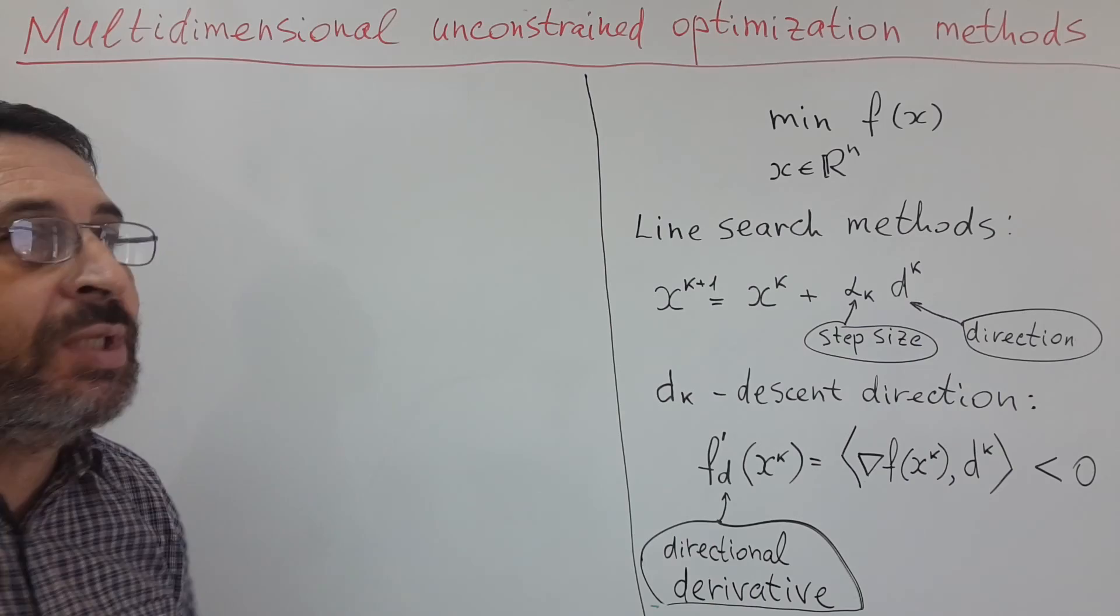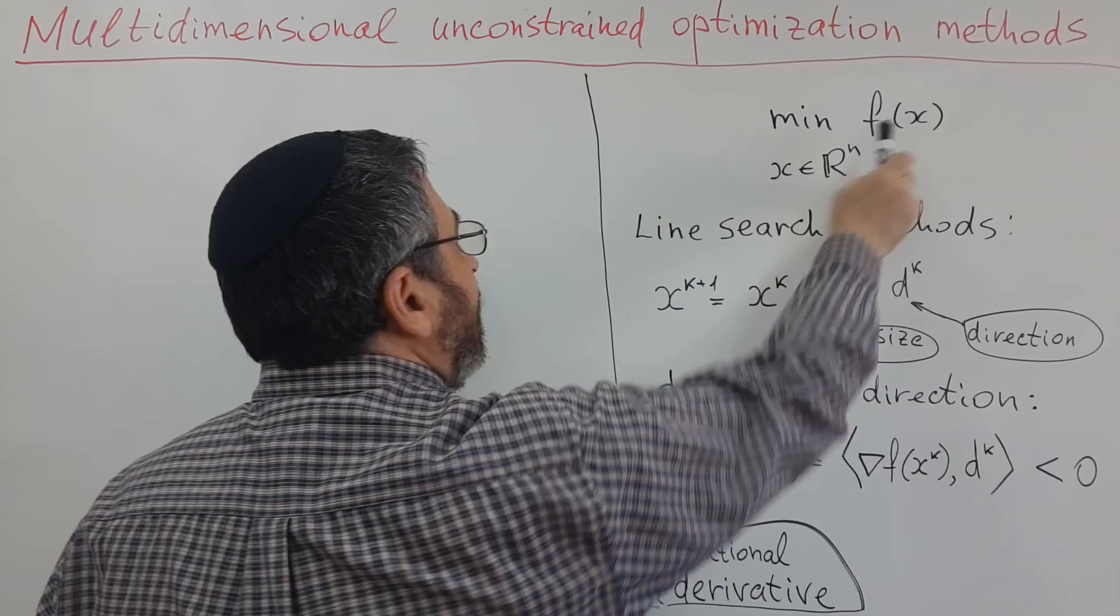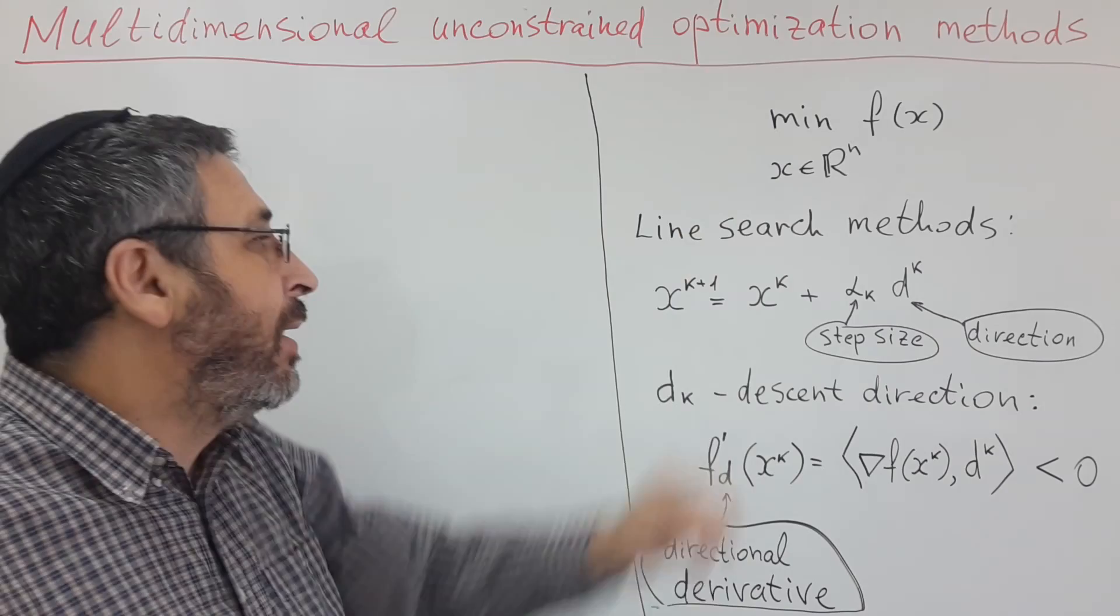Unconstrained optimization methods. We will consider minimization of function of several variables, minimum f, when x is a vector in r-dimensional Euclidean space.